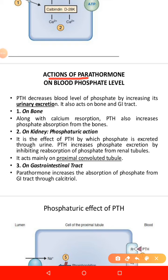We're looking at the action of parathormone and blood phosphate levels. PTH decreases blood levels of phosphate by increasing its urinary excretion. It acts on the bone along with calcium resorption — PTH also increases phosphate absorption there. On the kidney, PTH increases phosphate excretion by inhibiting the reabsorption of phosphate from the renal tubules, acting mainly on the proximal convoluted tubule. So PTH increases calcium reabsorption but increases phosphate secretion.